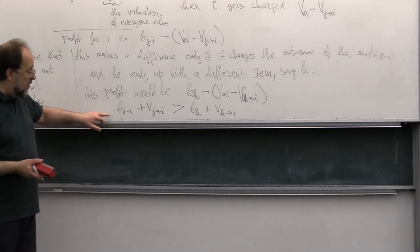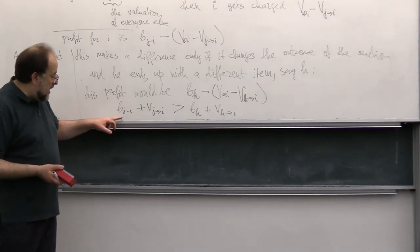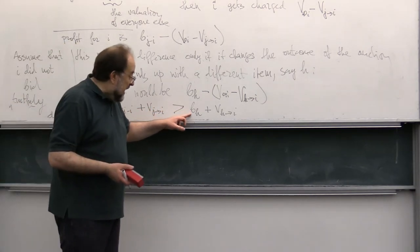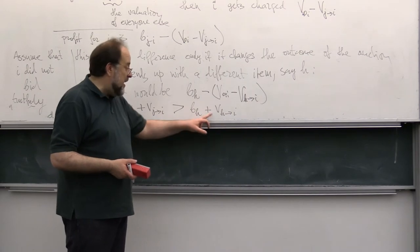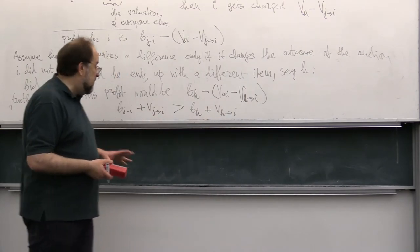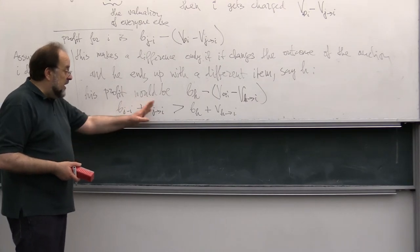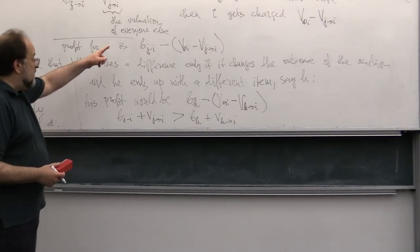Because all other valuations are the same. So if originally he's bid one, that must be because when he gets item J, it is larger than when he gets item H, because the distribution is always determined so that the sum total of valuation is bigger. But what would this mean?